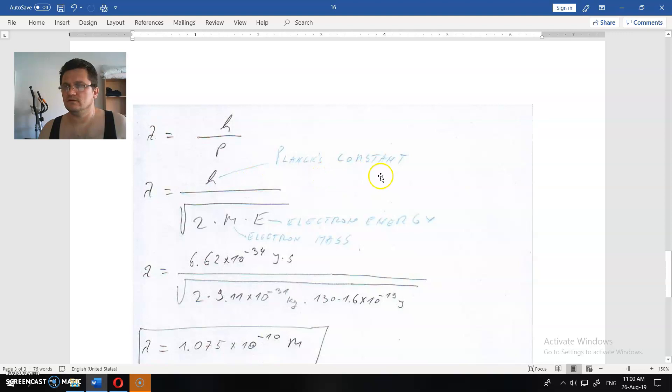This is the Planck constant that is equal, that is equal, that is a number that is equal everywhere. According to everybody, but not by me. That doesn't matter. And this is the momentum of the electron.